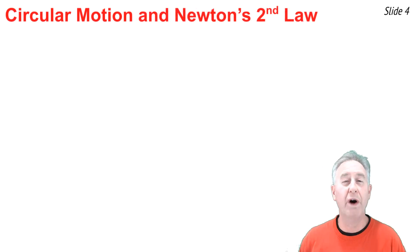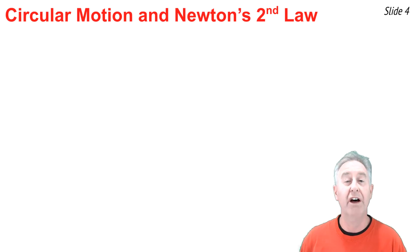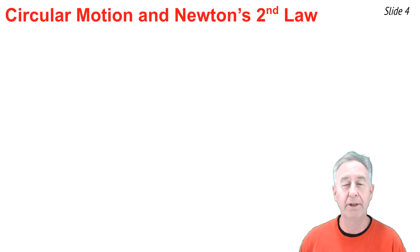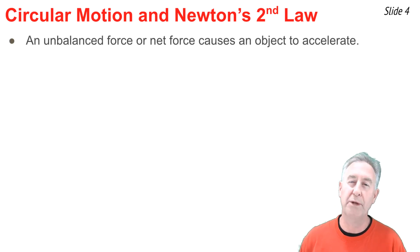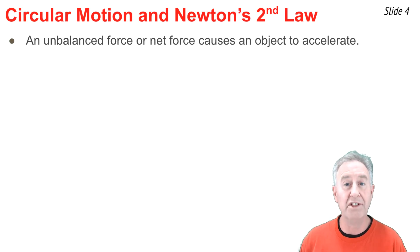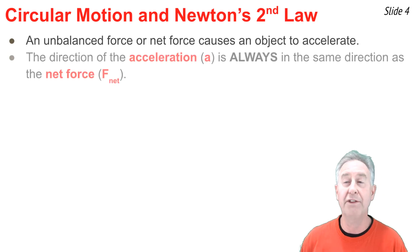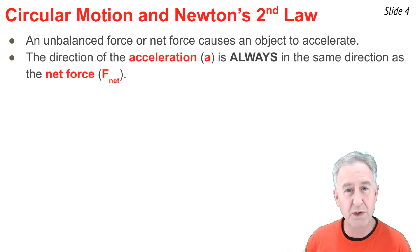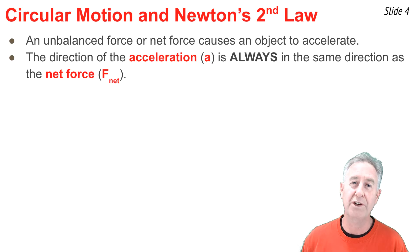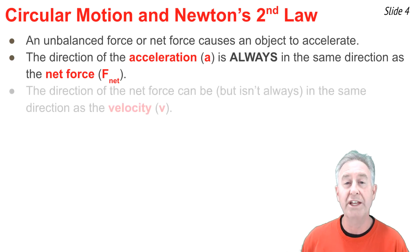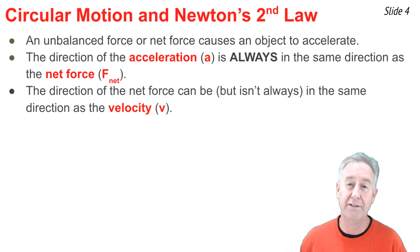To understand why objects move in circles, you need to understand Newton's second law of motion, most often associated with the equation A equals F-net over M. The law asserts that an unbalanced force, or net force, causes an object to accelerate, and the direction of the acceleration is always in the same direction as the net force. But the direction of the net force is not always in the same direction as the velocity vector.